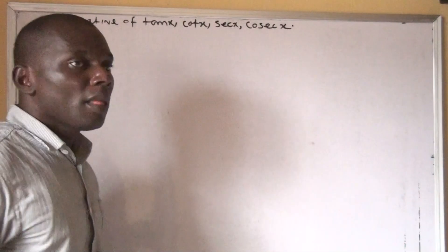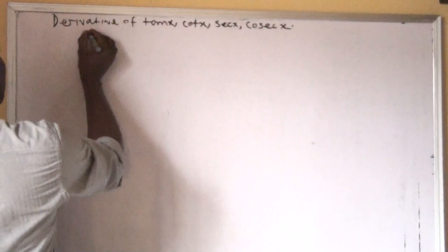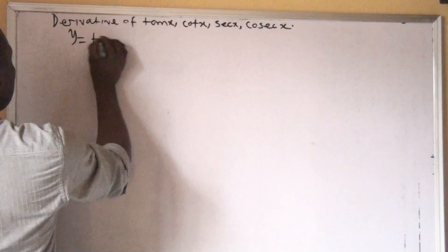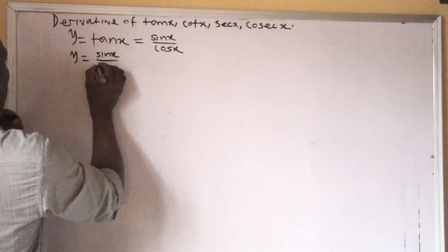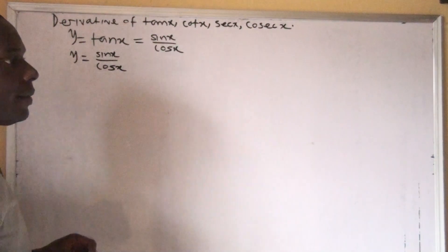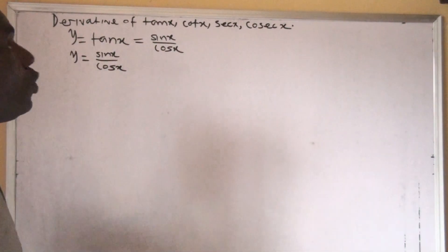We're going to look at these trigonometric functions. Now, if we have the first one, y is equal to tan x. Tan x is the same thing — it has the same ratio as sin x over cos x. So it simply means that tan x is the same thing as sin x over cos x. Here, this function is now a quotient, so we use the quotient rule to establish this.